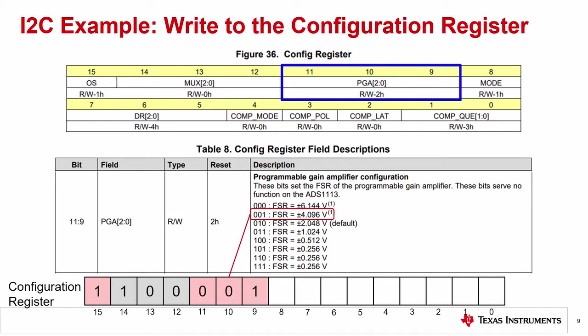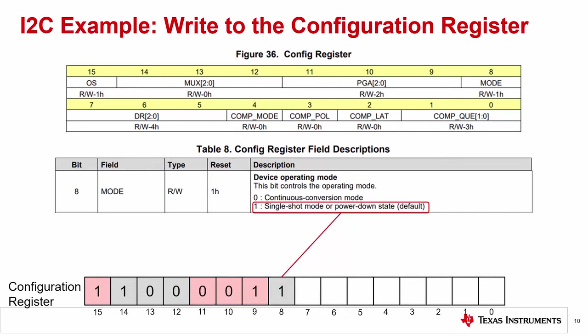Bits 11 to 9 set the PGA setting of the device. This is the setting for the programmable gain amplifier, which sets the full-scale range of the input measurement, determining how large of an input signal can be measured by the ADC. Here we set the ADC to measure a signal as large as plus and minus 4.096 volts. Set bits 11 to 9 to be 001 in binary. Bit 8 sets the operating mode for the device. For this operation, we want to set the device to be in a single shot conversion mode. Set bit 8 to 1.